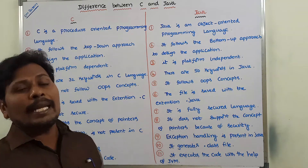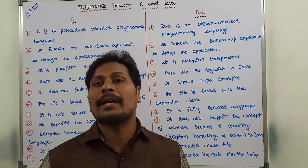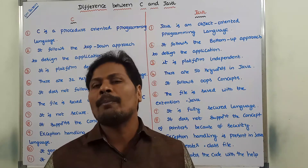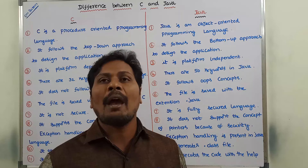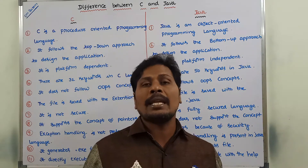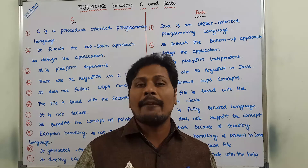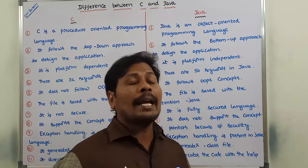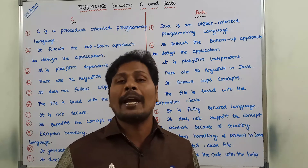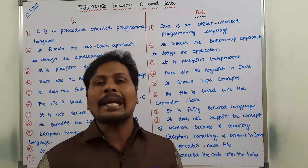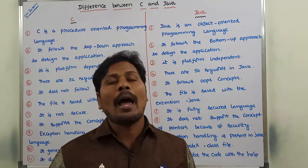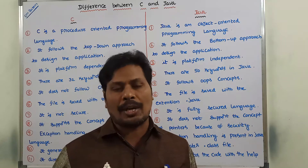Next point: In C language the file is saved with the .c extension. When we are saving a C program we have to use the file name with the .c extension. Whereas in the case of Java, we have to use the .java file extension. A Java program is saved with the .java extension — that means filename.java.